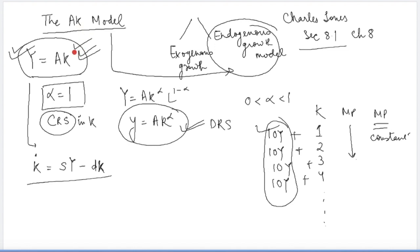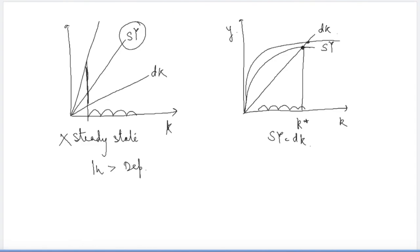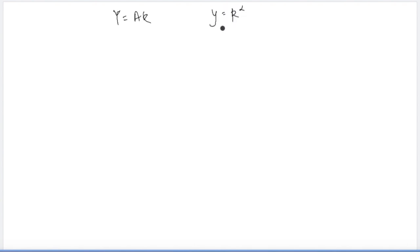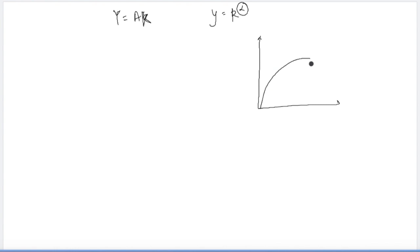This kind of model, where output is defined by a production function with constant returns to scale in capital, can actually produce endogenously defined long-run growth. The basic policy implication is: if an economy has a production function that follows constant returns to scale in capital, then the only job of the government is to promote policies that increase savings and investment in the economy. To boost growth, one has to only increase savings.